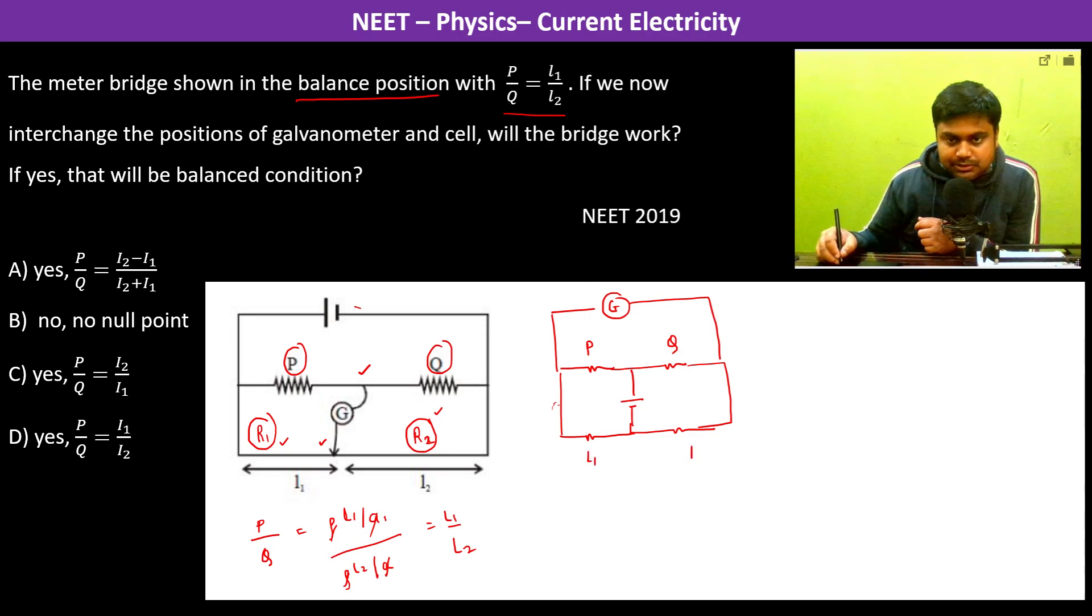This is L1 and this is L2 and this is potential reference V. The question is will the bridge work or not, and if yes what is the balanced condition.